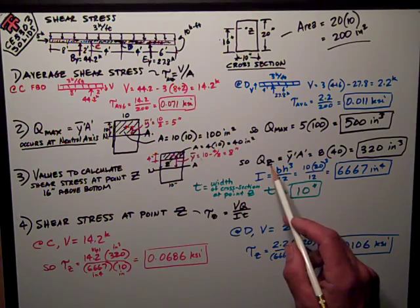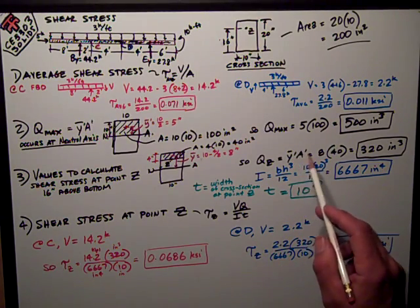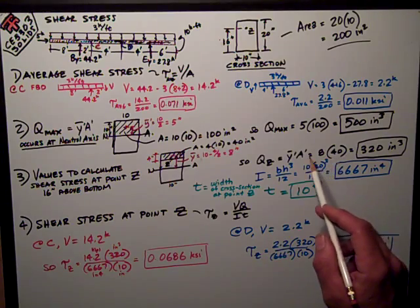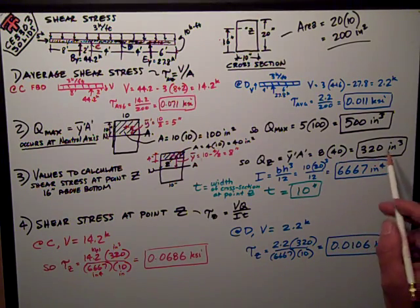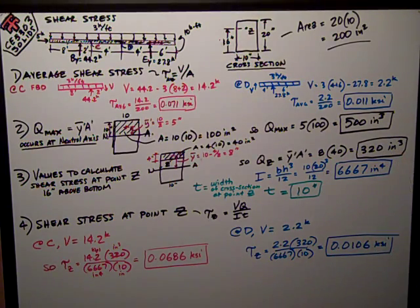So Q at Z is just 8, which is Y bar prime, times A, the area, 40 square inches, so it's 320 cubic inches, or inches cubed.